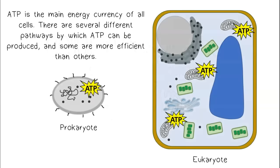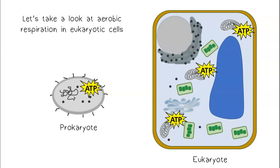ATP is the main energy currency of all cells. There are several different pathways by which ATP can be produced, and some are more efficient than others. Let's take a look at aerobic respiration in eukaryotic cells.